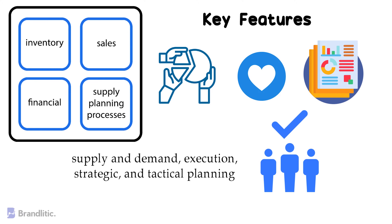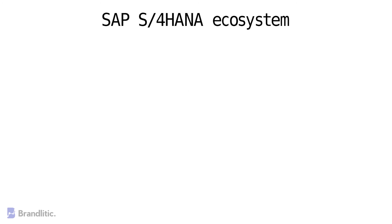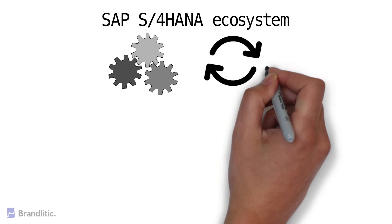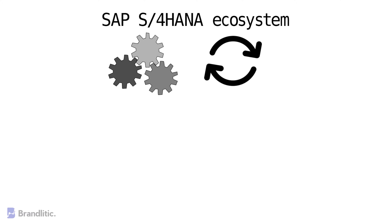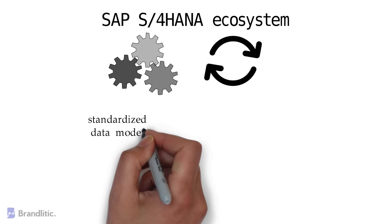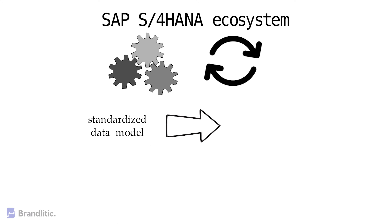SAP IBP plays an integral part in the broad SAP S/4HANA ecosystem. It has been specifically designed to help various businesses manage complex supply chains and streamline operations at various levels. Every module in this solution includes a standardized data model, which helps provide real-time supply chain visibility.